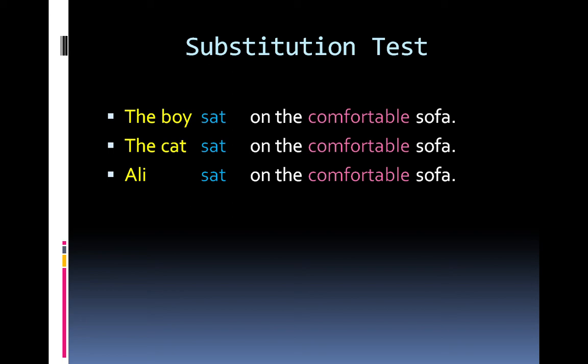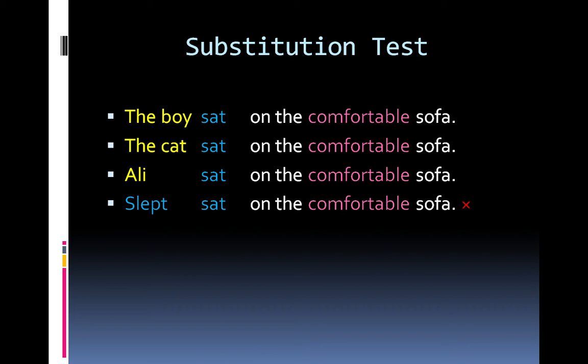They are playing the same grammatical role because they are all filling the same slot in the sentence and the sentence remains meaningful. Now let's try: 'Slept sat on the comfortable sofa.' Does this sentence make sense? No, of course not. 'Stood sat on the comfortable sofa.' Does this sentence make sense? No, not at all. This indicates that while 'the boy,' 'the cat,' and 'Ali' have got something in common, 'slept' and 'stood' are different — they don't belong to the same class or word group.